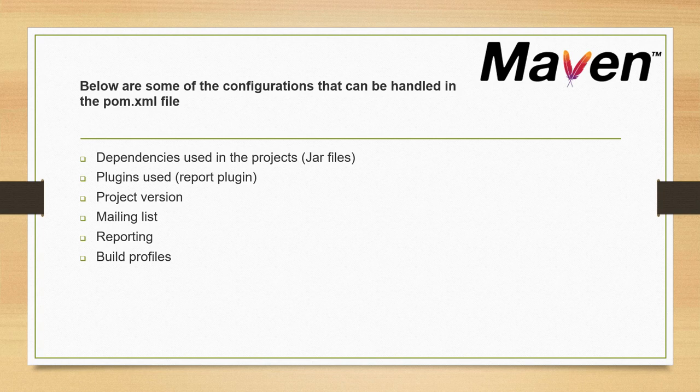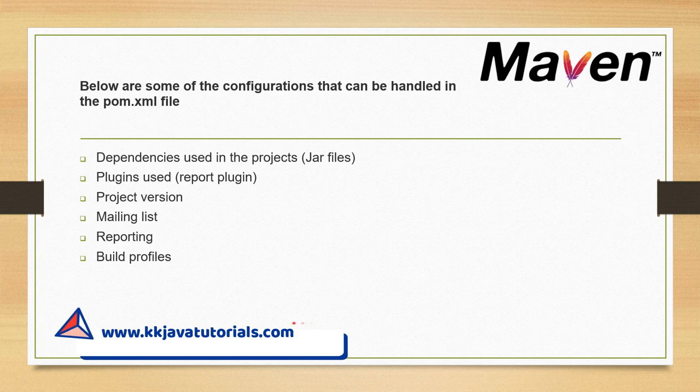pom.xml also contains the project version. You have two kinds of versions: one is the snapshot and the second is the fixed version. If your project is under development then that version is called snapshot. If you are working on any snapshot version and some other latest snapshot has been updated on the repository, then when you try to build your project the latest snapshot will be fetched and stored in your local repository.